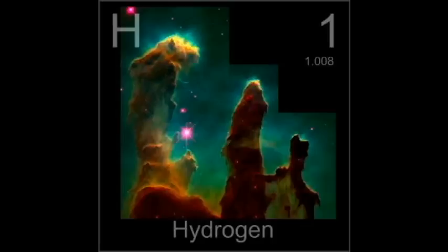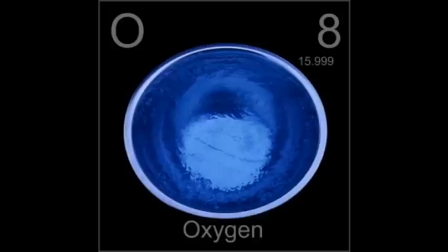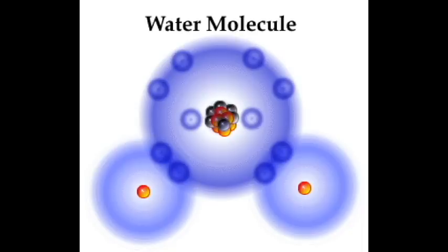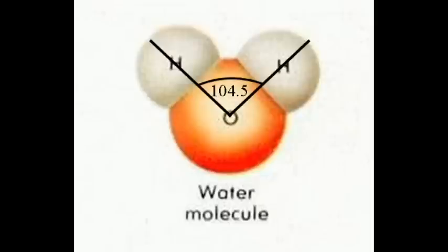Hydrogen wants one more to be stable. Therefore, hydrogen shares their electron with oxygen, and oxygen shares two of its electrons with hydrogen. The most stable angle at which hydrogen attaches to oxygen is 104.5 degrees, which actually made the Earth look as we know it today.